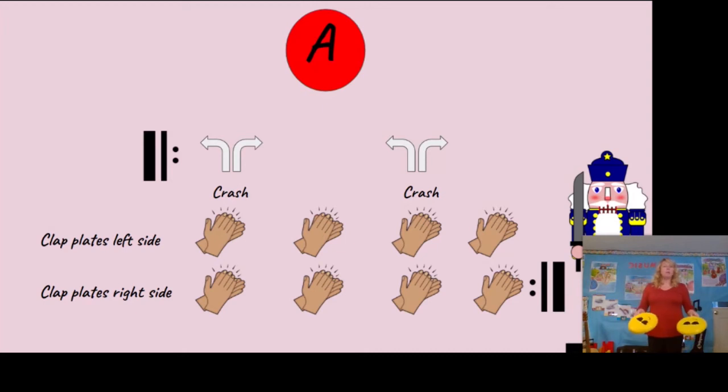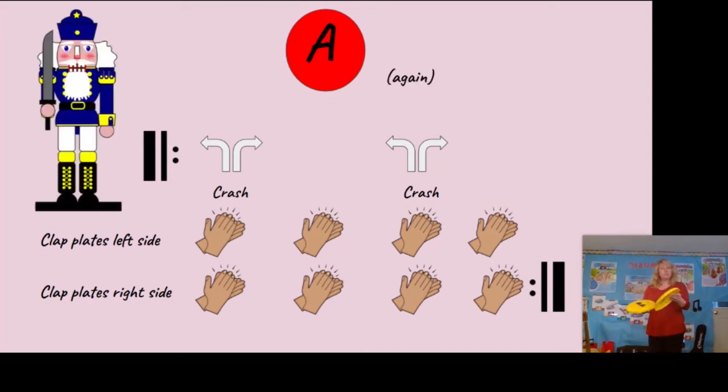Then we're going to repeat the A section again. You'll see it's the same thing. I'll move the nutcracker so you can make sure you're on the second time through. Crash, crash, one, two, three, four. One, two, three, four. Repeat. Crash, crash, one, two, three, four. One, two, three, four.